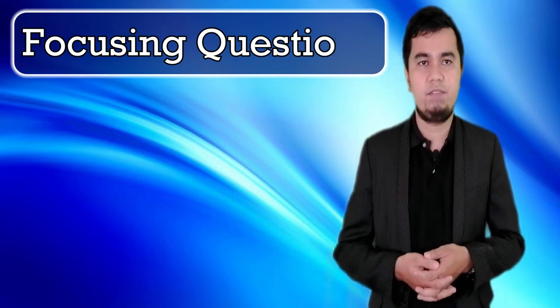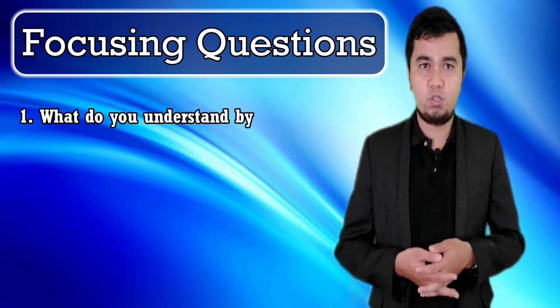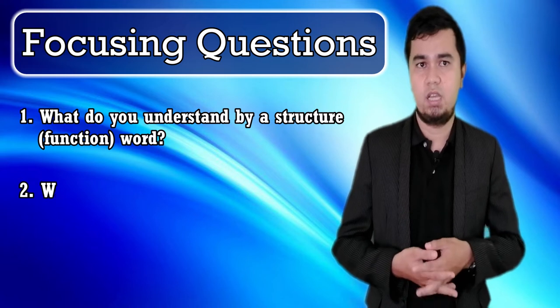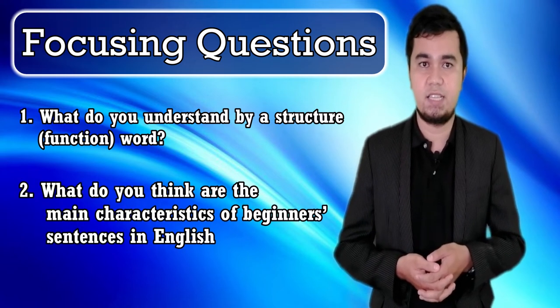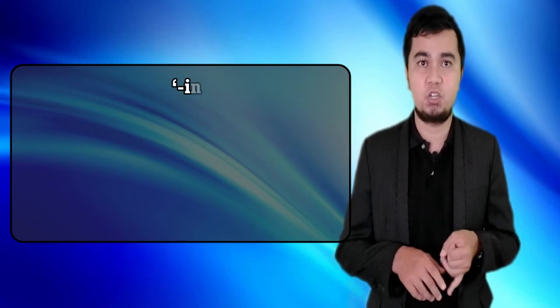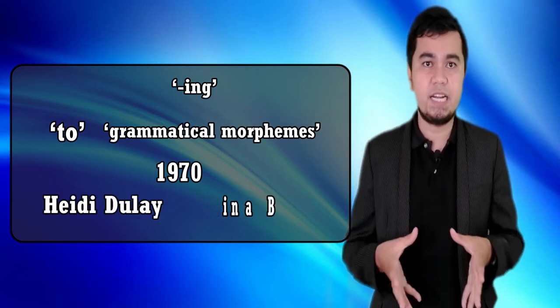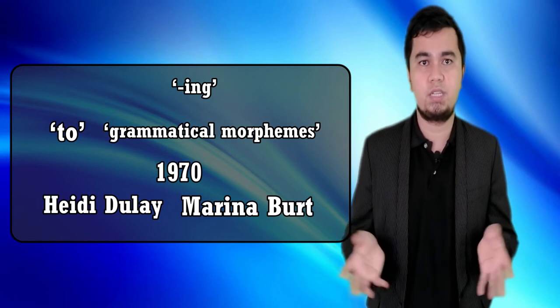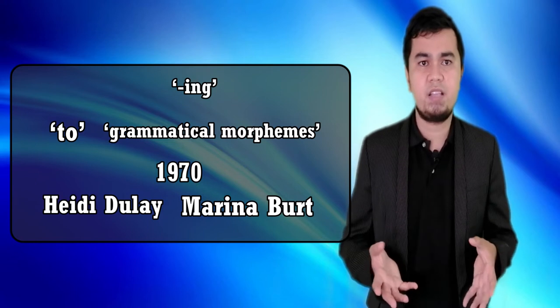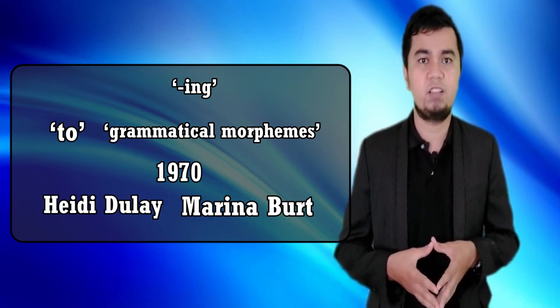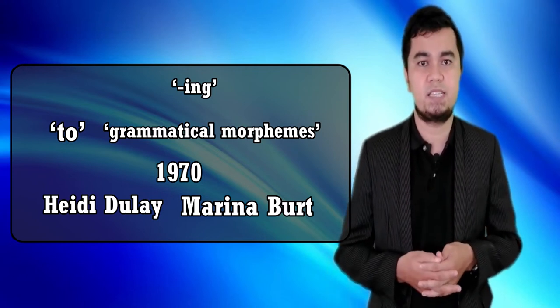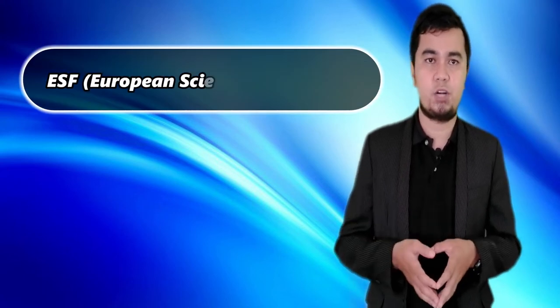Our focus questions are: what do you understand by a structure — is it function or word? What do you think are the main characteristics of beginner sentences in English or another second language? In some second language acquisition research, grammatical inflections like '-ing' are grouped together with structure words like 'to' as grammatical morphemes. In the 1970s, Heydai, Dulai, and Marina Burke (1973) decided to see how these morphemes were learned by second language learners.